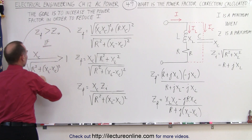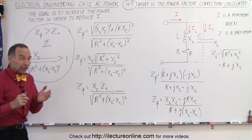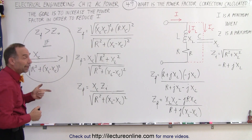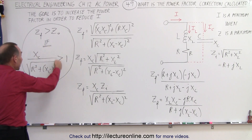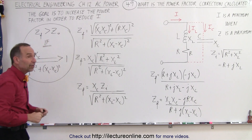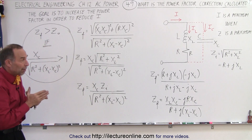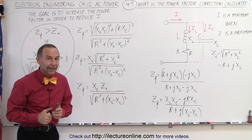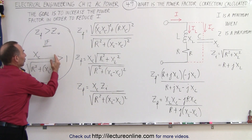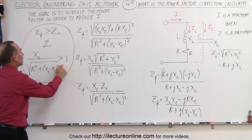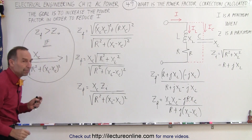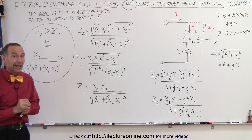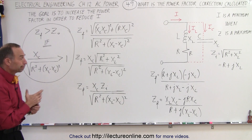We want to make the total impedance with the capacitor greater than the initial impedance so that the input current is smaller. So Z_final will be greater than Z_initial if X_C divided by the square root of R squared plus (X_L minus X_C) squared is greater than one. If we pick the correct capacitor value to satisfy this condition, we increase the impedance, increase the power factor, and require less input current to deliver power to the load — and that's how power factor correction is done.